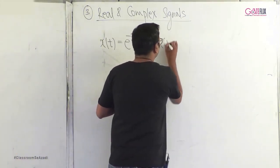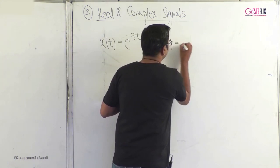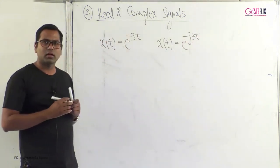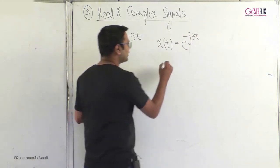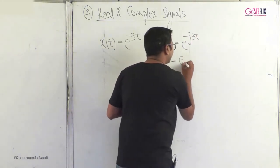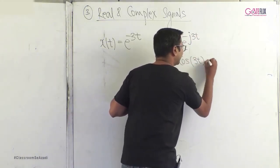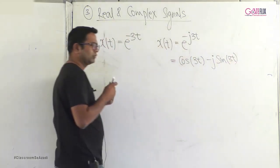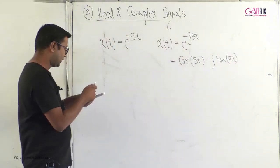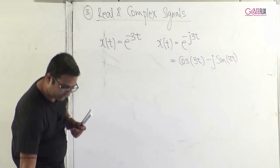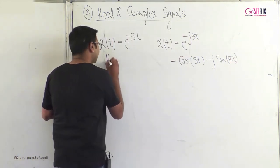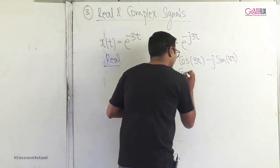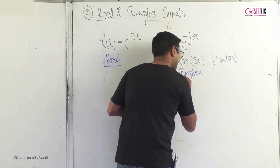An example of a complex signal is e^(−j3t). As you know, e^(−j3t) can be written as cos(3t) − j·sin(3t). Therefore, e^(−3t) is an example of a real signal and e^(−j3t) is an example of a complex signal.